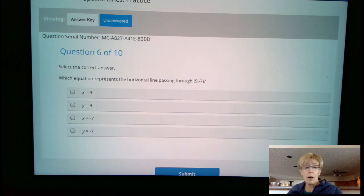I flipped over to question number 6 that's in my list. You get a randomly generated question. It says, which equation represents the horizontal line passing through the point (9, -7)? Well, again,